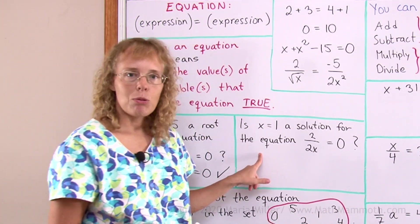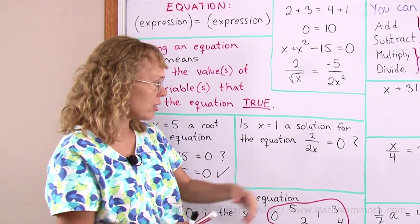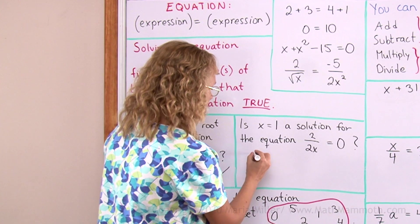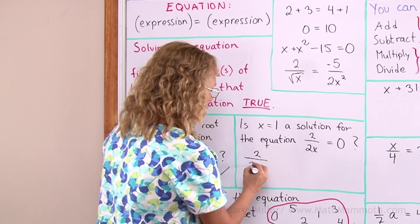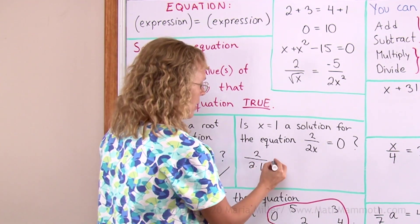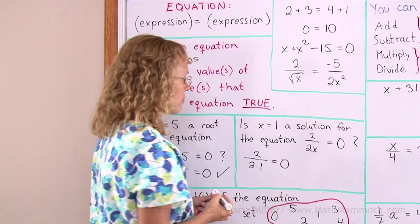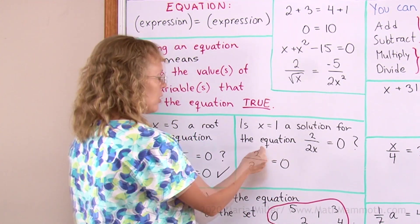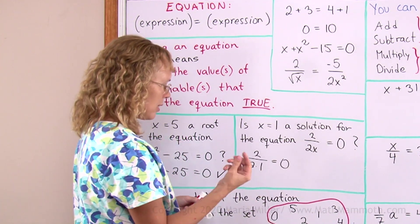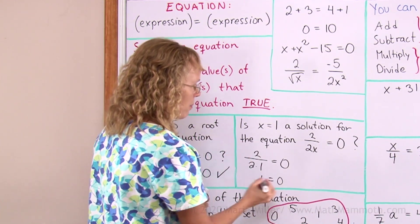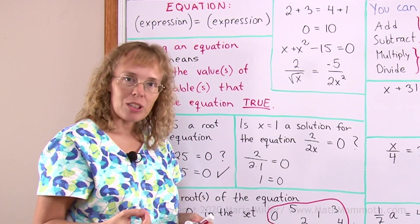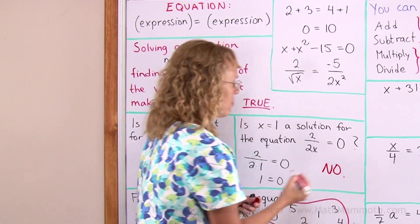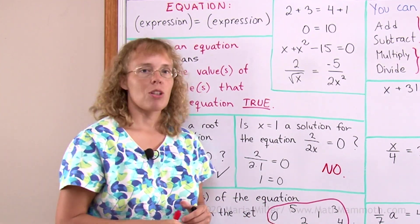How about here? Is x equals 1 a solution for this equation? I'll do the same. I'll just write 1 in place of x. So I get 2 over 2 times 1 equals 0. Now here I calculate 2 times 1. That's 2. Then 2 divided by 2 is 1. So I get 1 equals 0. That happens to be a false equation, right? So then my answer to this question is no.